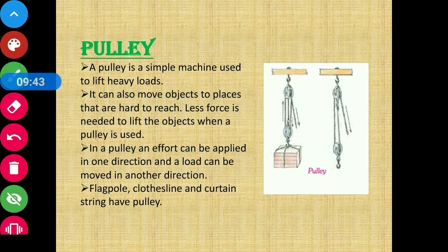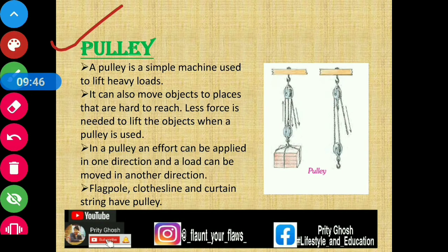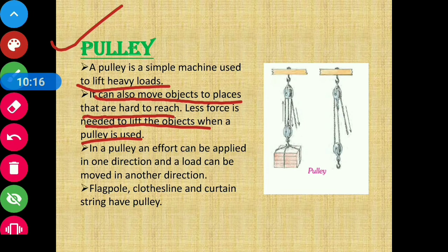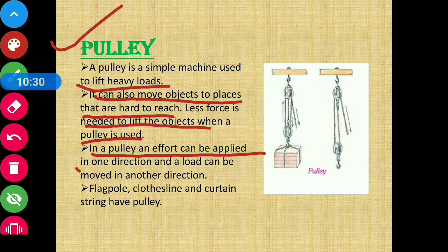Now let's move on to pulley. A pulley is also a simple machine used to lift heavy objects. It can also move objects to places that are hard to reach. Less force is needed to lift objects when a pulley is used. This pulley helps us reach those places which are hard to reach. Force is applied in one direction and the load can be moved in another direction.